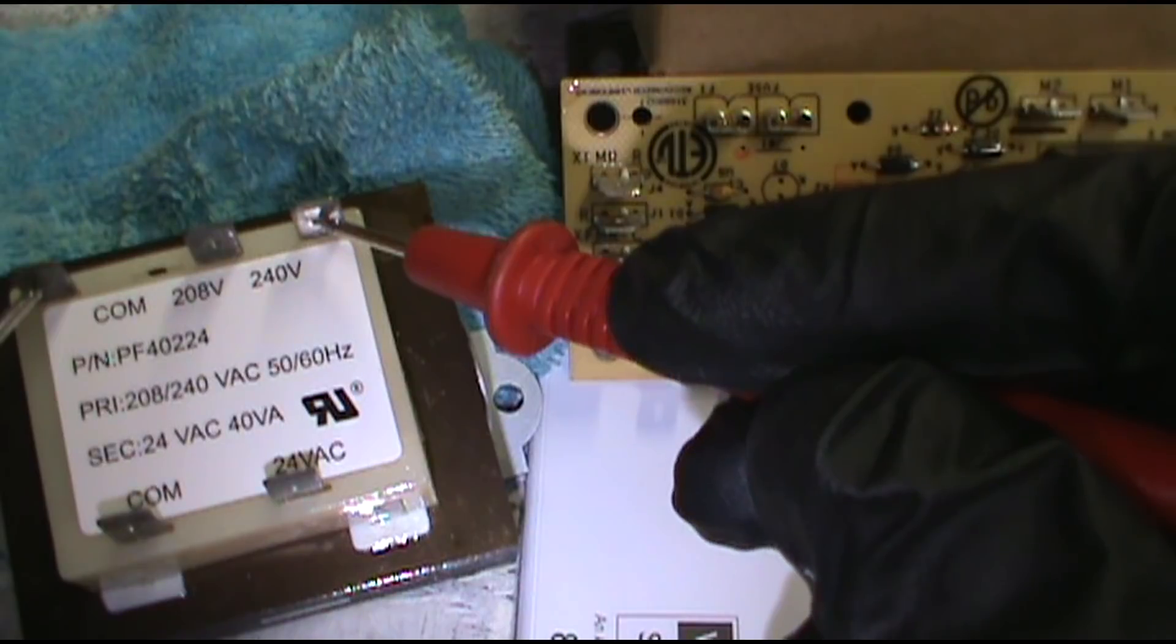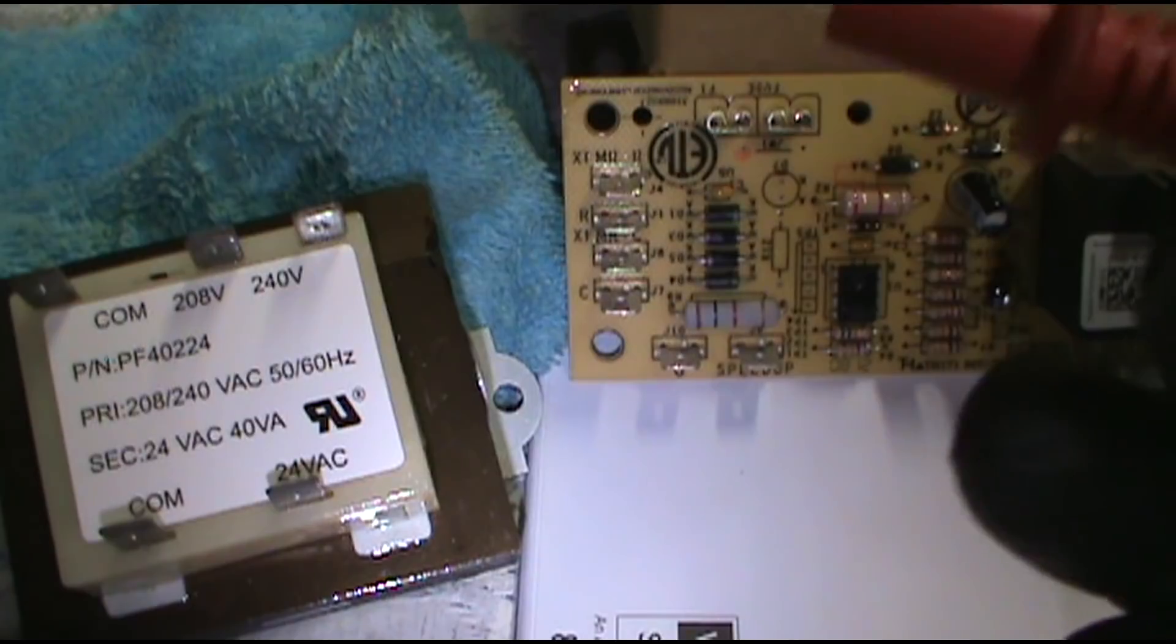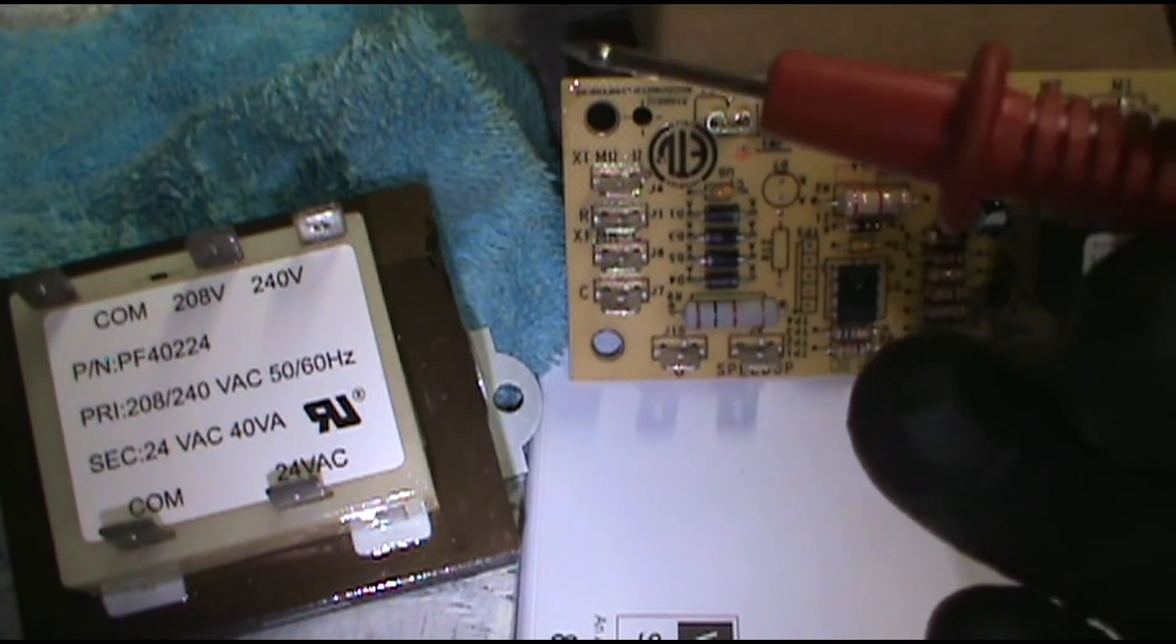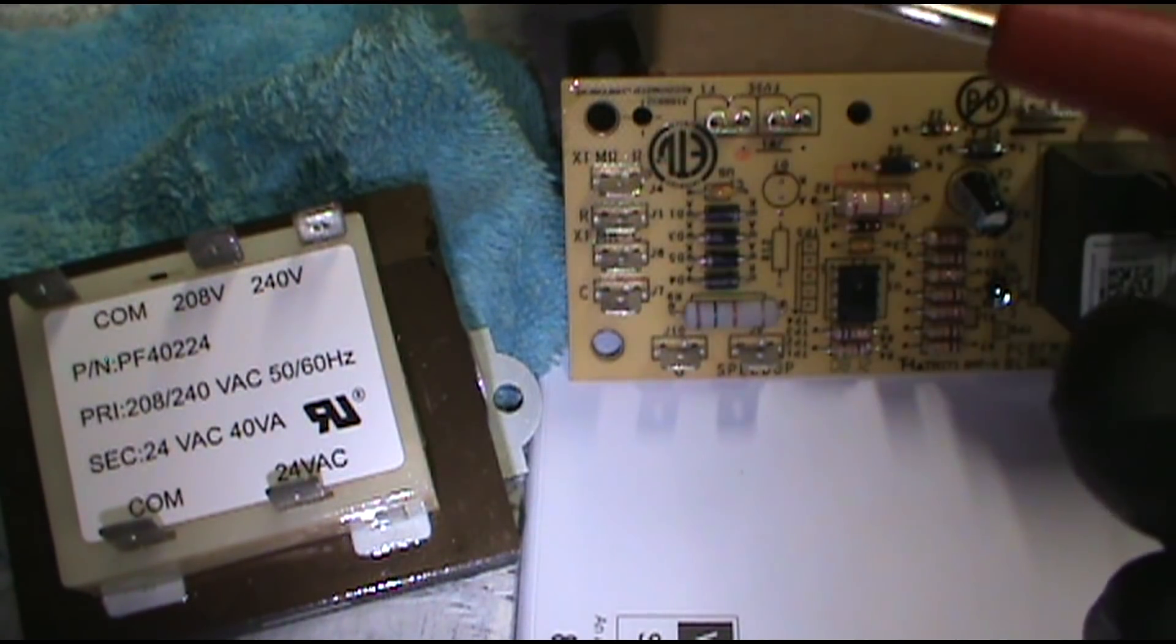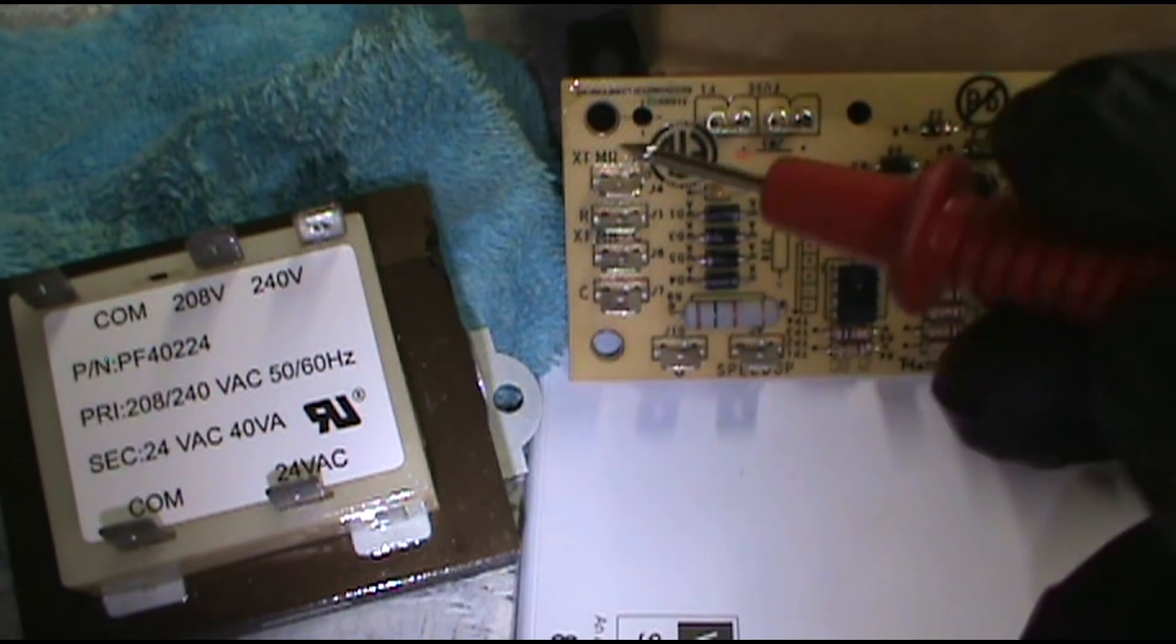All an air conditioner is, pretty much guys, is low voltage controlling high voltage. Low voltage closes the switches and connects the high voltage and turns everything on.